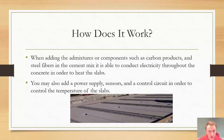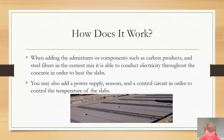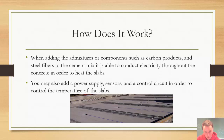How does it work? When adding the admixtures or components, such as those carbon products and steel fibers, to the cement mix, it is able to conduct electricity throughout the concrete in order to heat the slabs. You may also add a power supply, sensors, and a controlled circuit in order to control the temperature of the slabs. In the picture below, it shows a bridge under construction with wires laid out, like the blue wires, and black sensors in the middle that are installed about a half inch below the surface, able to monitor and control the heat of the concrete.